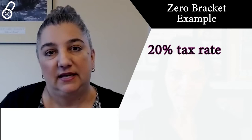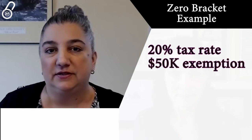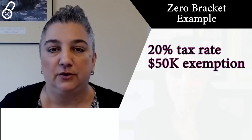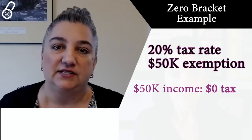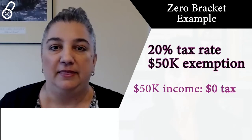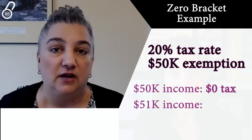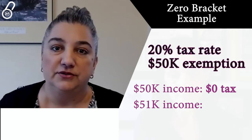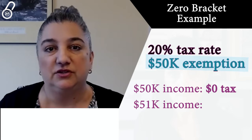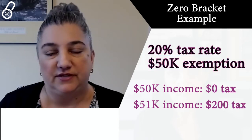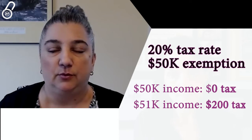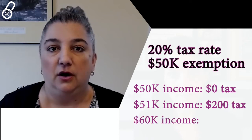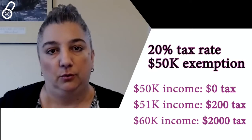For example, we could have a tax rate of 20%, but let's say it doesn't apply to the first $50,000 of income. So a taxpayer who earns $50,000 is taxed at a rate of zero. And a taxpayer who earns $51,000 is taxed at a 20% rate, but only on the $1,000 above the $50,000 exemption — so that would be $200 of tax. Obviously, as someone earned more and more income, their overall tax bill would go up.